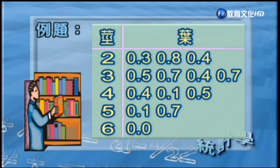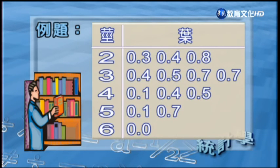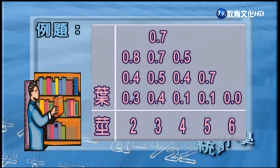從這個地方可以看得出來，2的部分有2.3、2.8、2.4；3的部分有3.5、3.7、3.4、3.7，以此類推到6的部分有6.0。如果把葉裡面的資料再依大小做排序，例如2的這邊有2.3然後依序到2.4、2.8；3的部分有3.4、3.5、3.7、3.7，更能夠看出數據的分布情形。把這個圖轉個方向，可以看出這也是一種統計圖，可以看出各個資料類別的分布情形；其實這樣轉過來的圖就有點像直方圖的意思。